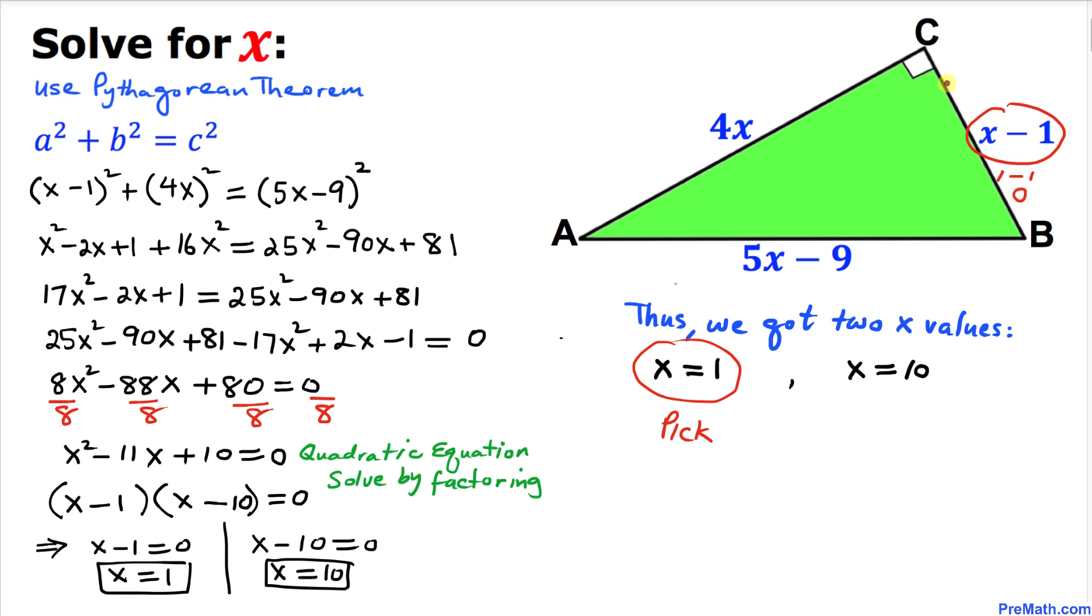That means this side is going to be 0. That is not possible, so we are going to reject this x equals 1 value. Therefore, we are going to accept x equals 10.